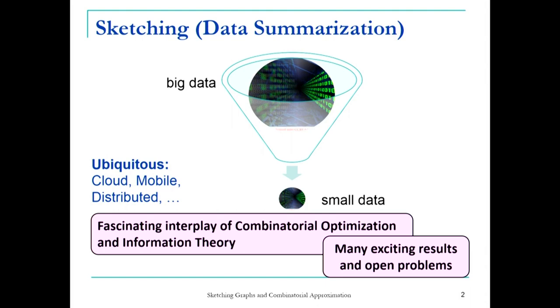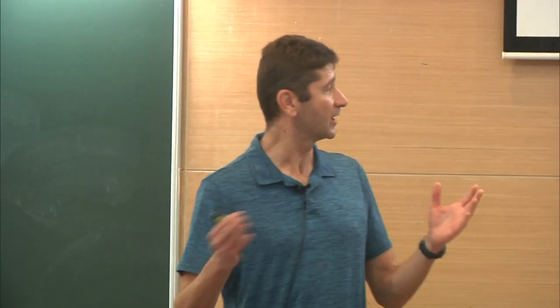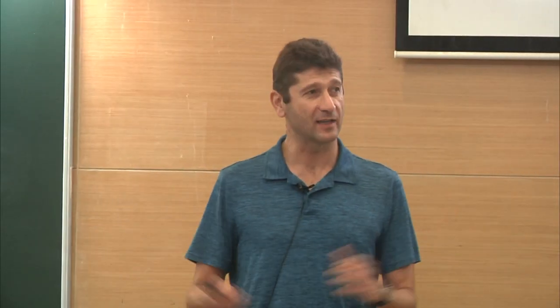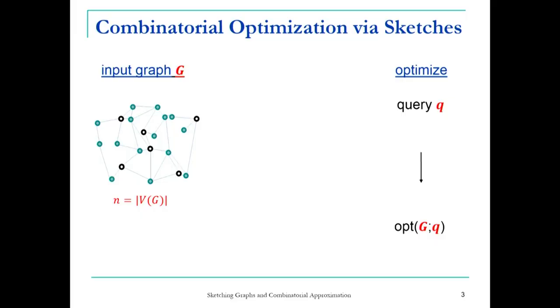There are many exciting results, and I'm going to tell you about some of them here. There are also many open problems — I try to focus on these in my talk because everybody wants to hear about great results and problems to work on. So, right into the subject: suppose we have an input graph G, and we want to solve a combinatorial optimization problem. We have a query Q, and we're trying to find the optimal solution — among all feasible solutions, find the best one, which usually means minimizing or maximizing some objective.